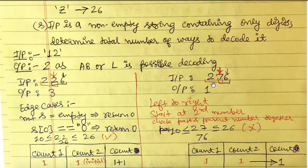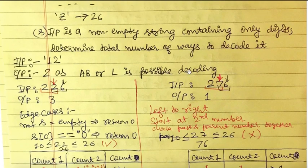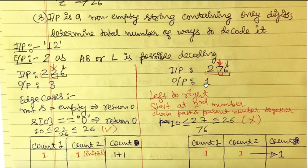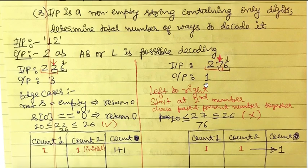Now consider '276'. We can take 2, 7, and 6 separately — that's one way. Can we take 27 together? No, because 26 is the highest valid number, so 27 cannot be decoded. Similarly, 76 cannot be decoded as a pair. So we have just one way, and the answer is 1.